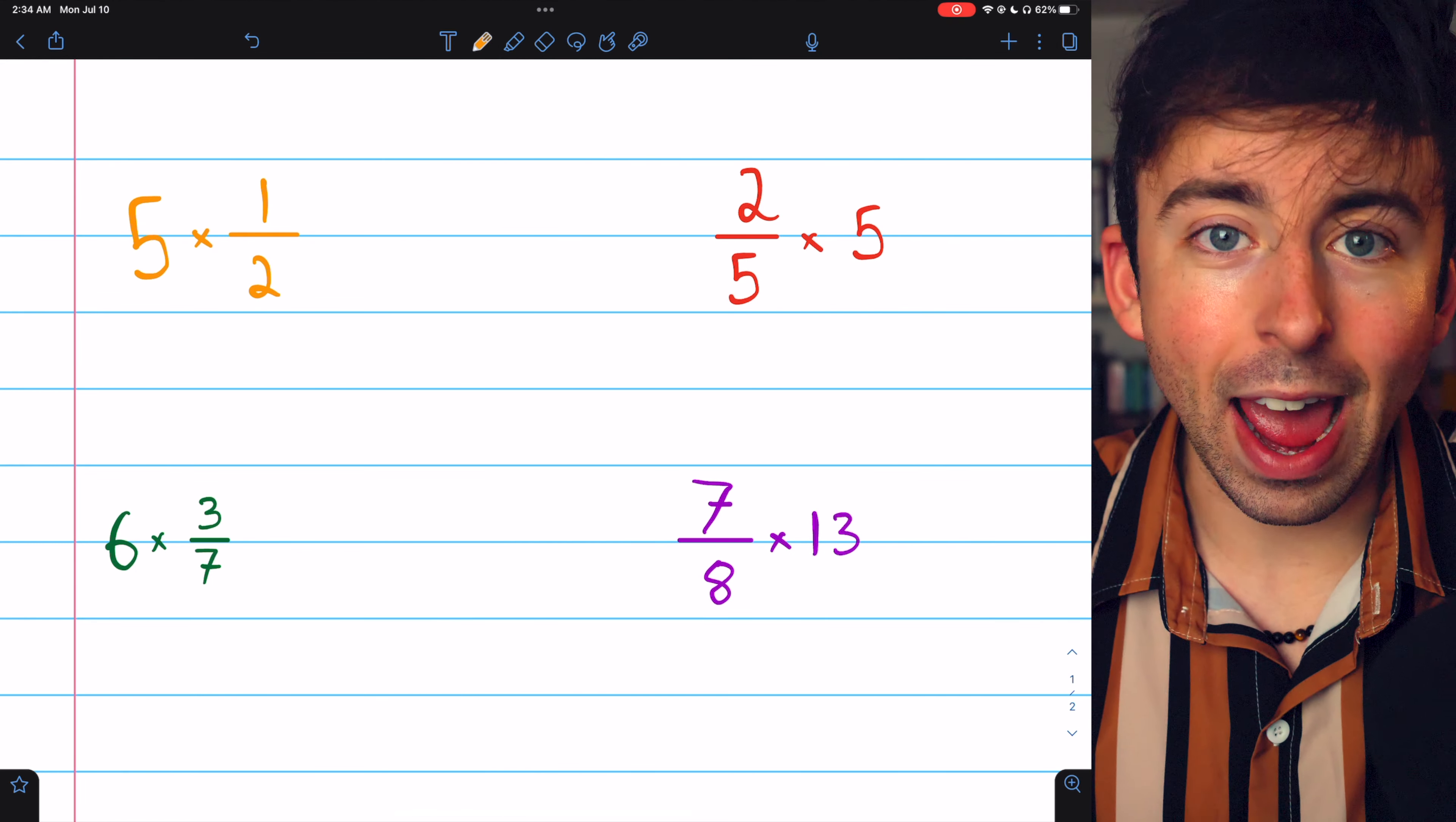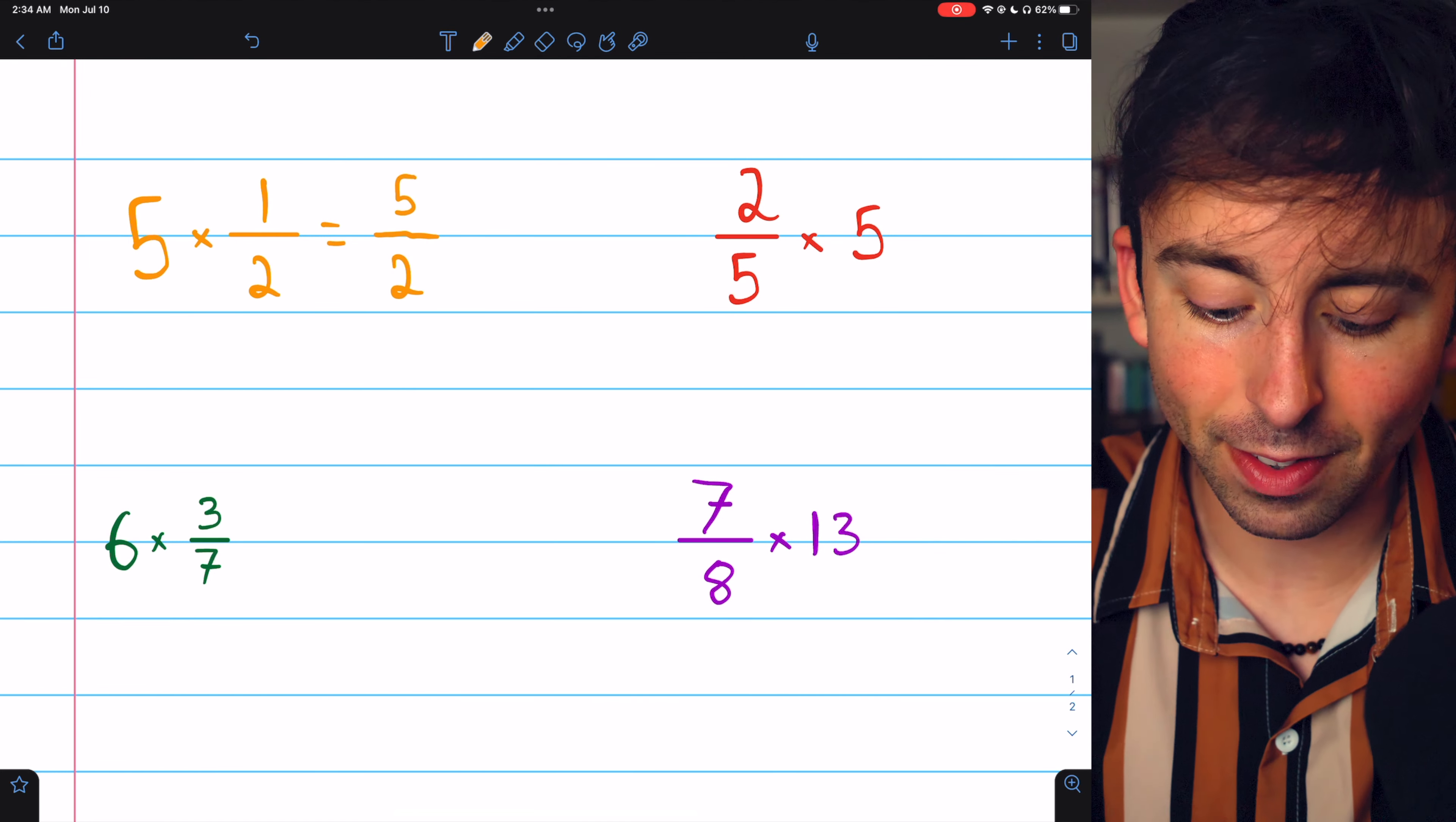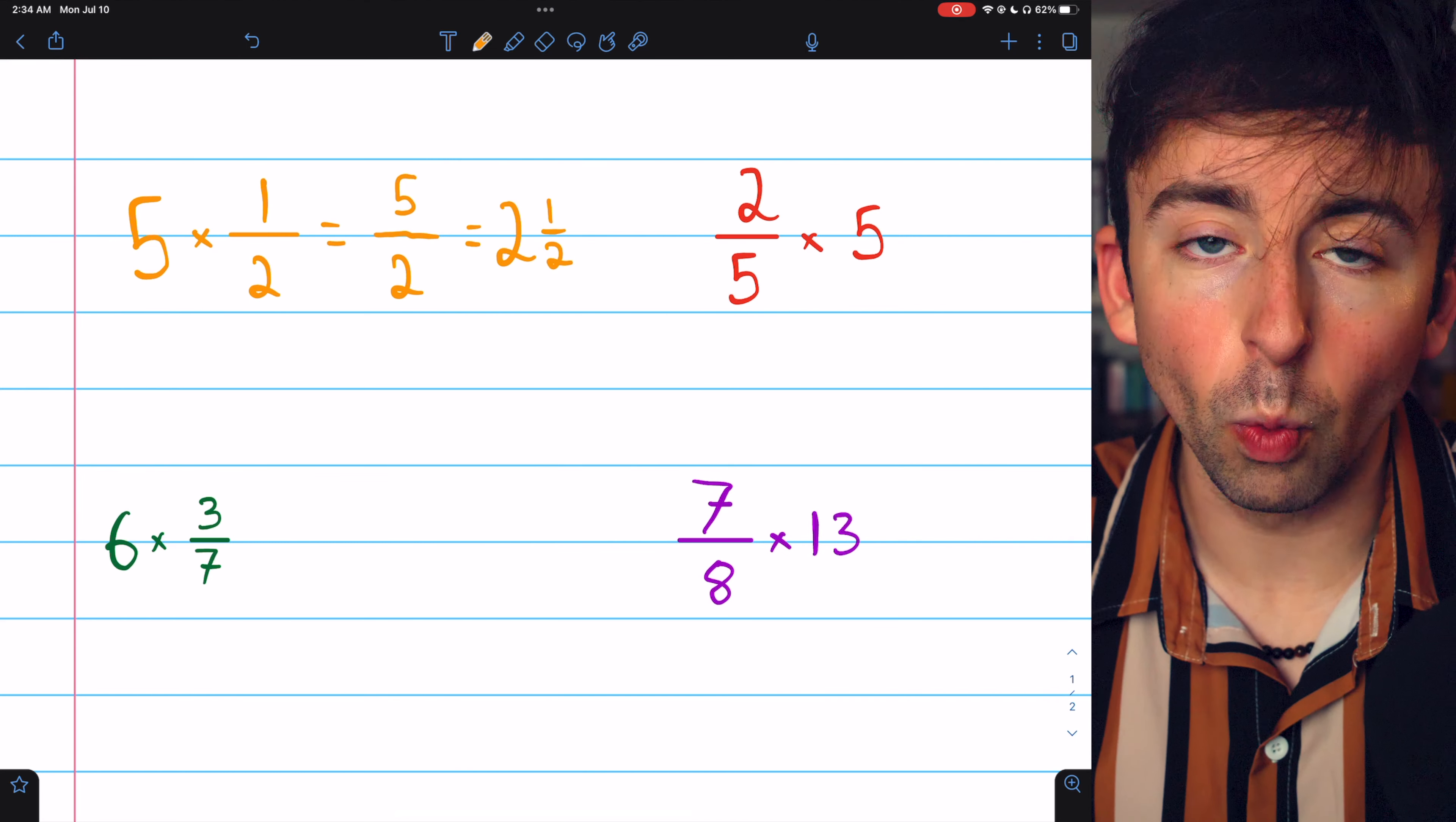If you have 1 half 5 times over, how many halves do you have? Well, it's as easy as multiplying the numerator 1 by 5. We have a total of 5 halves. And if you want to write this as a mixed number, we can ask how many times does 2 go into 5? The answer is twice, 2, 4 with 1 left over. So it's 2 and 1 half.